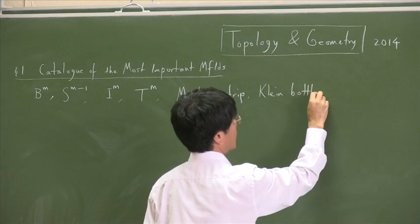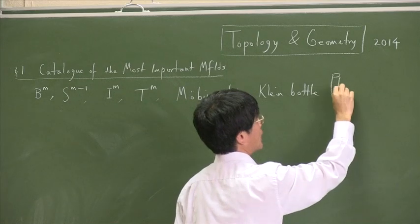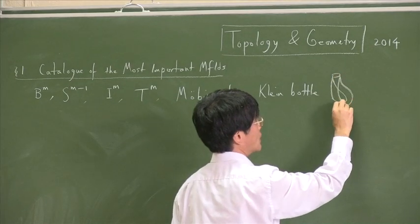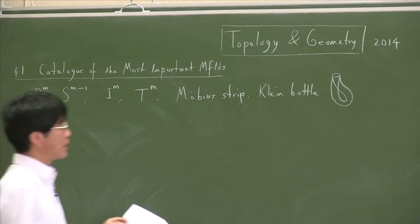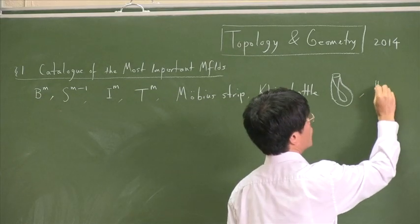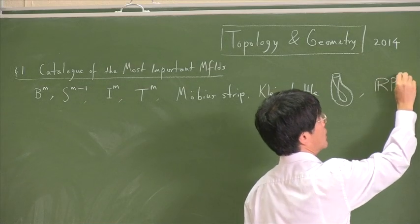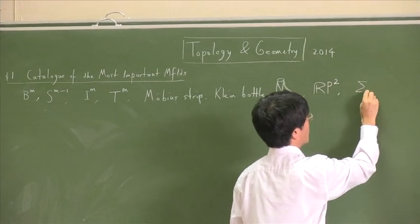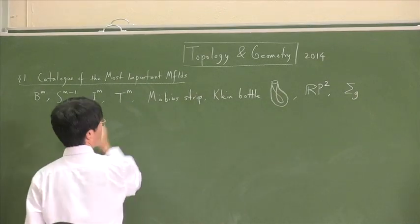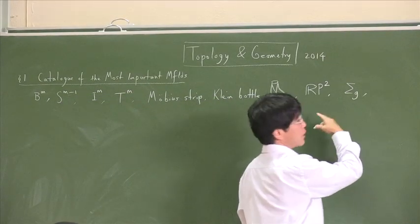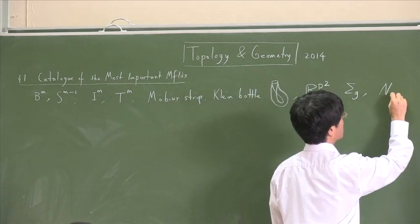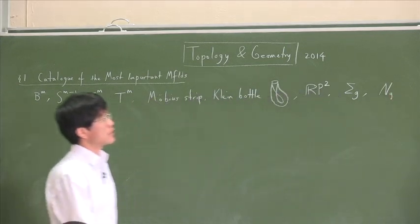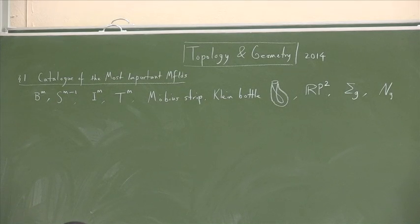Also, something called a Klein bottle. You might remember that. And the simplest way, I find, of drawing this is something like that. It's a bottle which joins up with itself, but in a funny sort of way. There was also the real projective plane, and by combining the torii, you had the ribbon surface of genus g, that was orientable, and the non-orientable surfaces of genus g, combining out the two, the projective planes. So we had all those things.